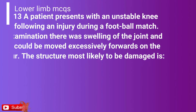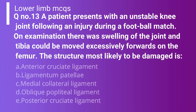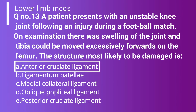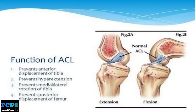Question 13: A patient presents with an unstable knee joint following an injury during a football match. On examination, there was swelling of the joint and the tibia could be moved excessively forward on the femur. The structure most likely to be damaged is: Option A: Anterior cruciate ligament. Option B: Ligamentum patellae. Option C: Medial collateral ligament. Option D: Oblique popliteal ligament. Option E: Posterior cruciate ligament. The correct answer is Option A — anterior cruciate ligament — because it protects the femur from overextending on the tibia, and excessive anterior movement is protected by the anterior cruciate ligament.